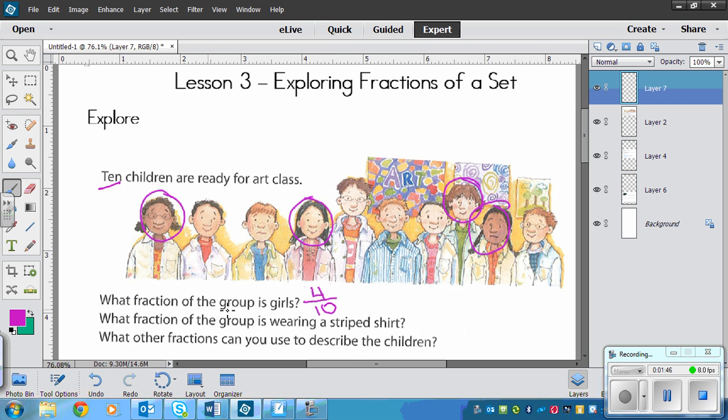Next one, what fraction of the group is wearing a striped shirt? So this one we don't need to use stereotyping, we can just look. We found this person right here is wearing a striped shirt, and that looks like it. So that means that's one person out of a total of ten people.